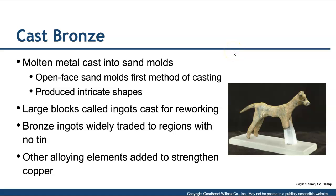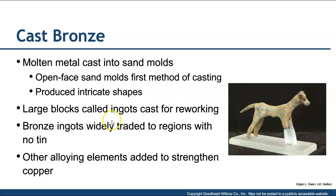With cast bronze, we realized that once the metal was melted down, we could pour it. Open-faced sand molds were one of the very first methods of casting. In manufacturing processes class, there was a demonstration where aluminum was melted and poured into a sand cast mold — basically the same concept. You could produce intricate shapes by pressing forms into the mold and pouring molten material in. Large blocks called ingots were cast first, then reworked into different shapes, becoming a commodity traded between regions, especially areas that didn't have tin.